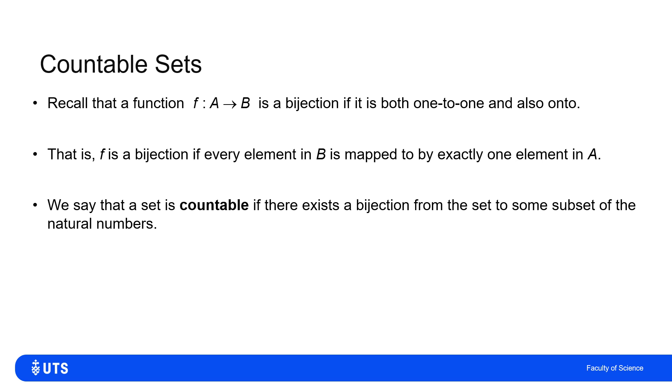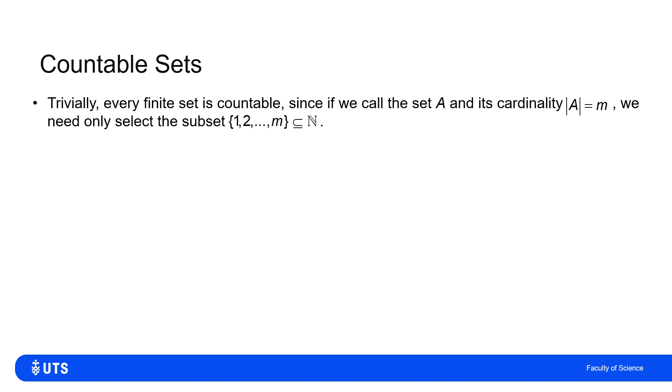So we can use this definition to start to measure or count the sizes of sets. We say that the set is countable if there exists a bijection from that set to some subset of the natural numbers. So I could assign a count to the size of the set. We'll start with the easiest and most trivial of cases, and that would be a finite set.